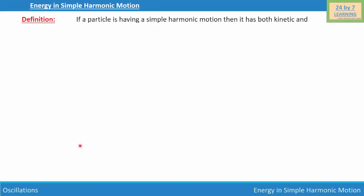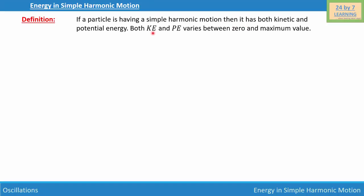Energy in simple harmonic motion. If a particle is having simple harmonic motion, it has both kinetic and potential energy. Both kinetic energy and potential energy vary between zero and a maximum value. We need to find both the kinetic energy and the potential energy.